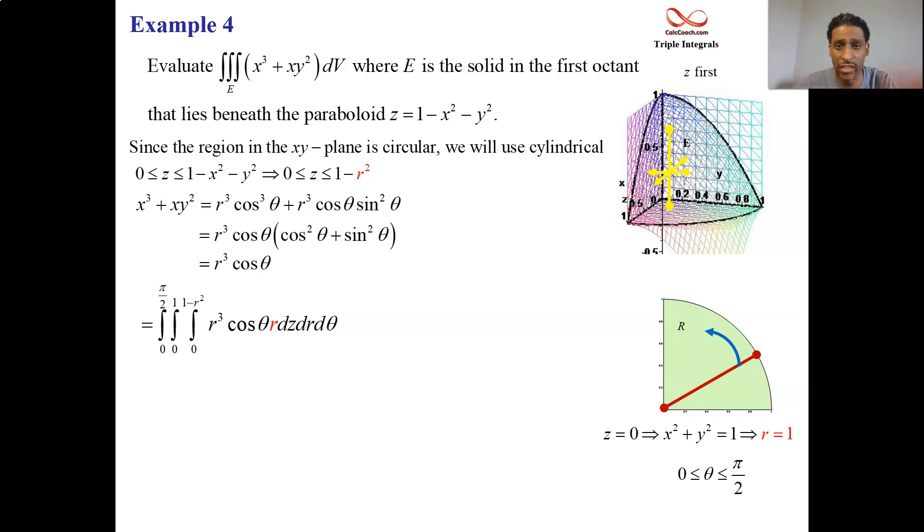We're integrating out z first. No arguing about the order. Z is going to be first. So, I don't see any z's in the integrand. So, we'll just get a z. We'll put in the 1 minus r squared. Put in the zero. So, we just have 1 minus r squared. It became r to the fourth because it was r cubed. And then the r dr d theta part gave us r to the fourth. And now that's going to be multiplied by the quantity of 1 minus r squared from the z integration.